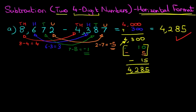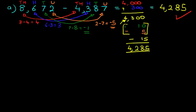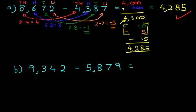So that was the first example. We're now going to scroll down and move on to our second example and a slightly different method. This time we have 9,342 minus 5,879. So we're going to start with the number on the right-hand side, the number we are subtracting.